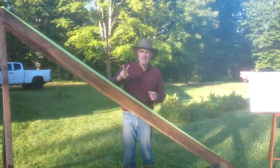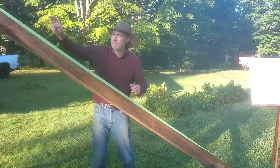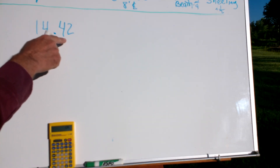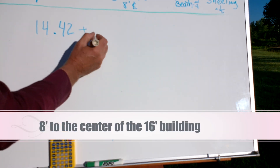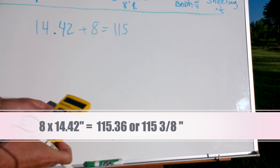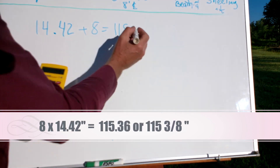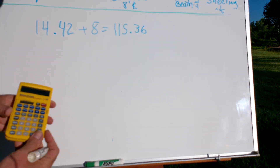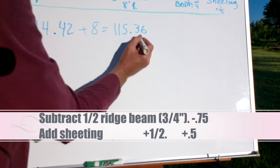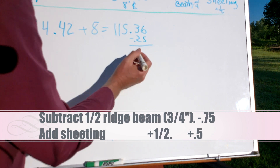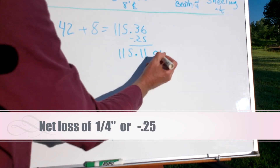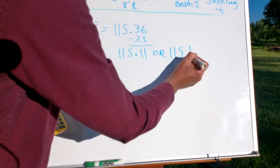We want from the peak down to where the bird's mouth starts. We got 14.42 inches for every foot of run on an 8/12, and we have an eight-foot center for the building. 14.42 times 8 equals 115.36 inches. We have a ridge beam and sheeting: take away 3/4 inch for the ridge beam, add 1/2 inch for the sheeting — that's minus 0.25 net — giving us 115.11 inches, or 115 and 1/8 inches. That's the bird's mouth distance.